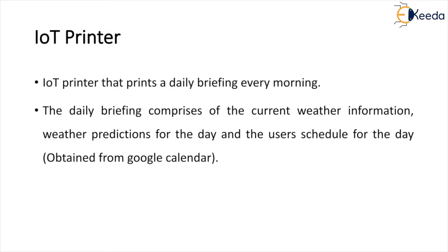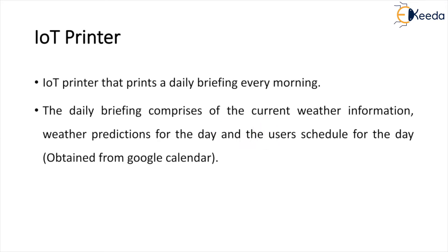The IoT printer prints the daily briefing every morning. For example, the daily briefing comprises of current weather conditions and weather information, predictions for the day, and what events are scheduled – obtained from Google Calendar. The IoT printer briefs all of this daily data, which is available and stored in the cloud, and we can access it.